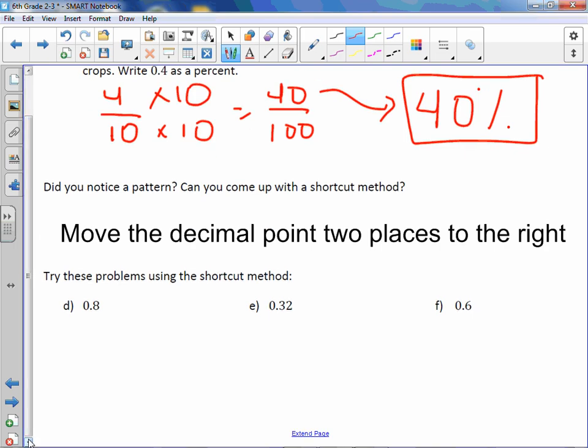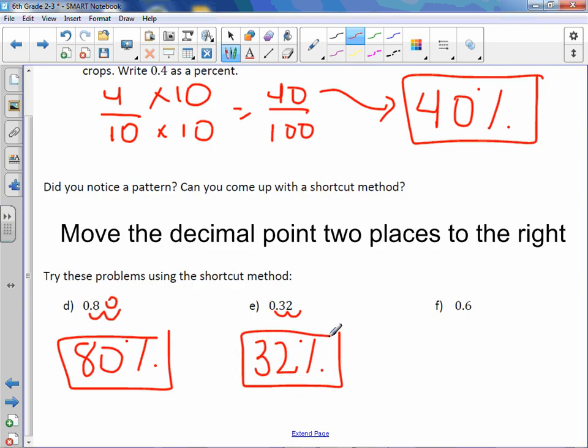Now let's look below and change these using our shortcut method. Point A: we're going to move it 2 decimal places to the right, fill in the gap with a zero - this is 80%. Letter E: move the decimal point 2 to the right - 32%. Letter F: move the decimal point 2 to the right, fill in the gap - 60%.